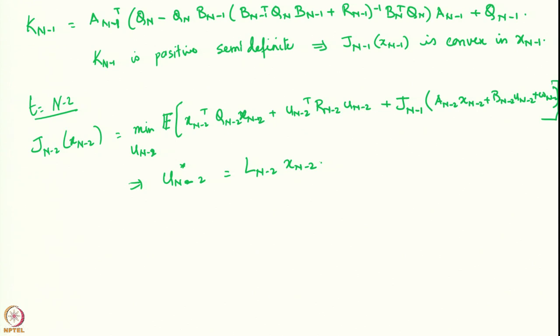If we expand out J_{n-1} for the n-2 step, we get terms that do not depend on w_{n-2} at all, a term linear in w_{n-2} whose expectation is zero since w_{n-2} is zero-mean, and a quadratic term in w_{n-2} that does not depend on u_{n-1} or x_{n-1}. What remains is a quadratic and convex expression in u_{n-2}, and setting the gradient to zero gives u*_{n-2} = L_{n-2} x_{n-2}. All conclusions from time n-1 hold at n-2, and therefore at n-3, n-4, and so on.